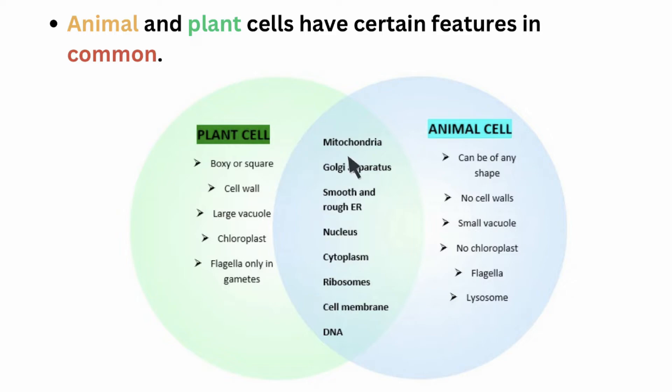Common structures found in both animal and plant cells include: mitochondria, Golgi apparatus, smooth and rough endoplasmic reticulum, nucleus, cytoplasm, ribosomes, cell membrane, and DNA.